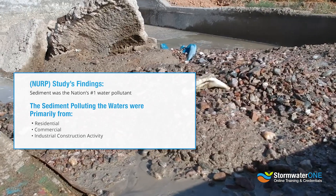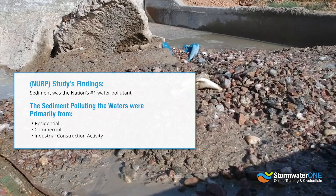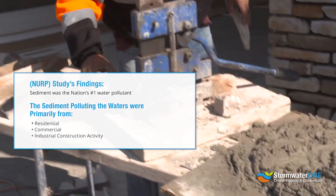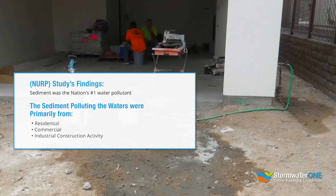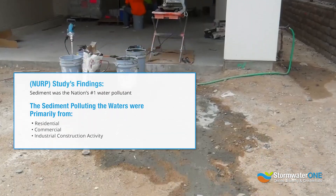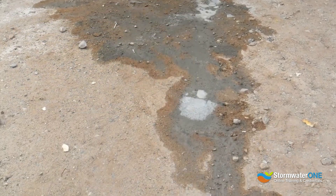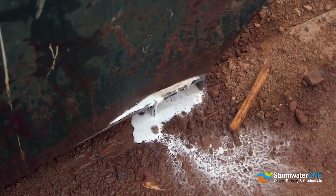Because of these findings, the NPDES Clean Water Act program was modified, and a section focusing specifically on stormwater from construction activity was added to the program.